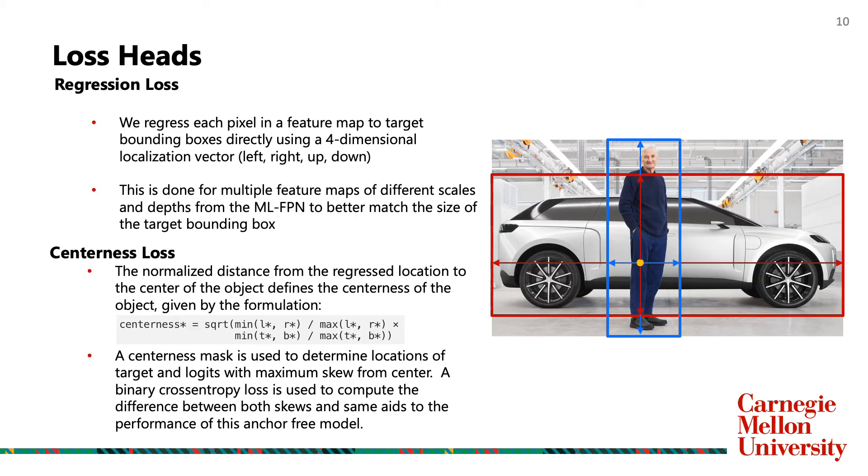Coming to the localization loss, we regress each pixel in a feature map to target bounding boxes by computing the generalized IOU loss. A third head called centerness head has been added in this model. This is a measure of centerness of the positive sample location inside the bounding box. A centerness mask finds the location of target and logits with maximum skew from center. I will now hand over the presentation back to Shairi.